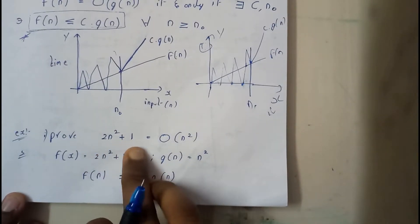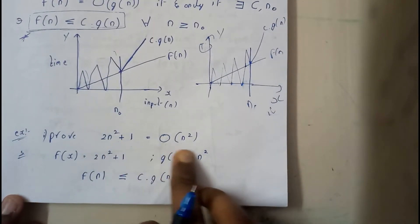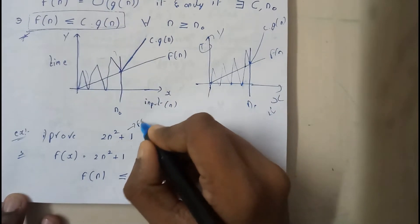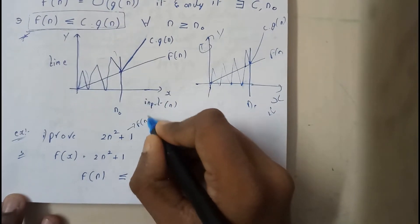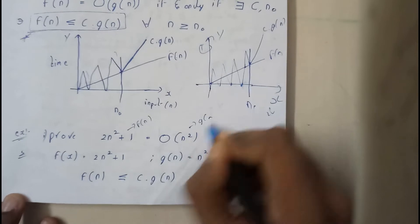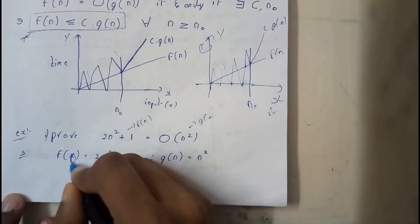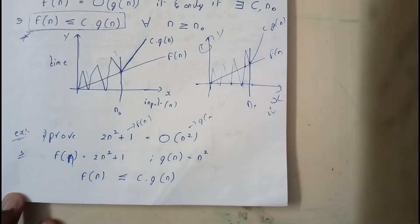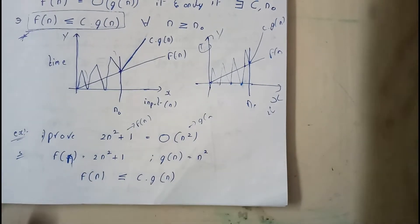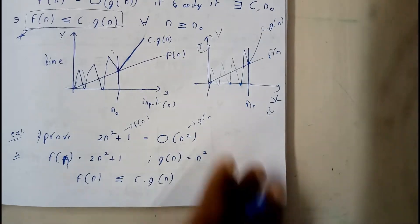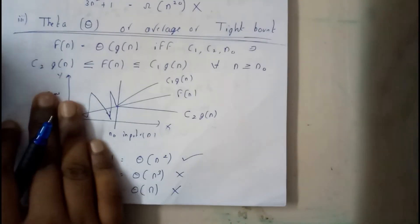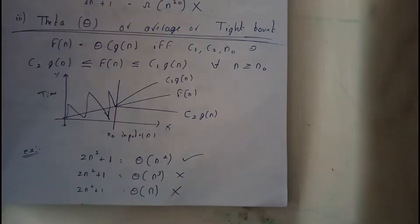Let us go through a problem to make it clearer. We need to prove that 2n² + 1 = O(n²). From the question itself, we can say f(n) = 2n² + 1 and g(n) = n². The condition is f(n) ≤ c·g(n).